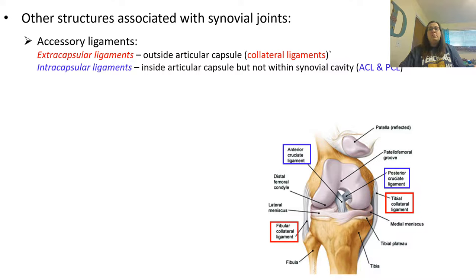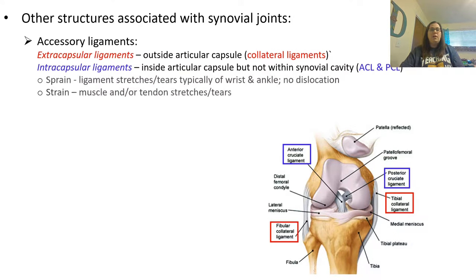There are also intracapsular ligaments inside the capsule. In the knee, these are the ACL — anterior cruciate ligament — and the PCL — posterior cruciate ligament — which are actually in the synovial cavity but connect the bones to each other. A sprain and a strain are two different things: a sprain is where a ligament gets stretched and can tear, often in the wrist or ankle, with no dislocation. A strain involves a muscle and/or tendon that gets stretched or torn. A sprain deals with ligaments; a strain deals with muscles and tendons.